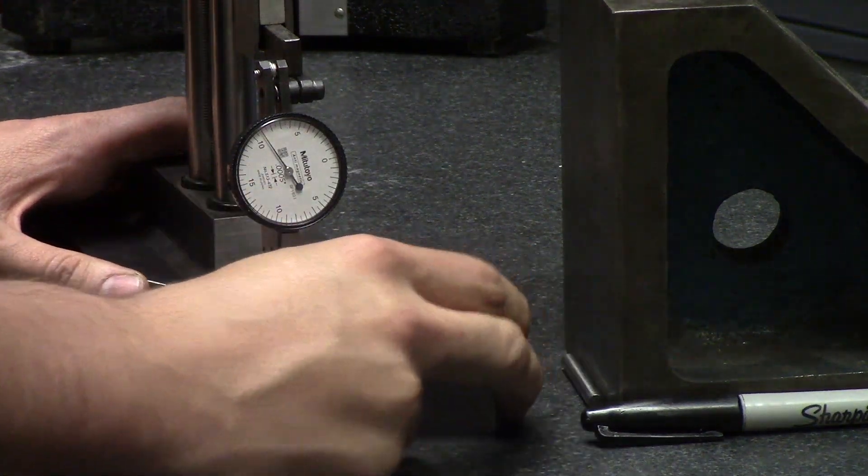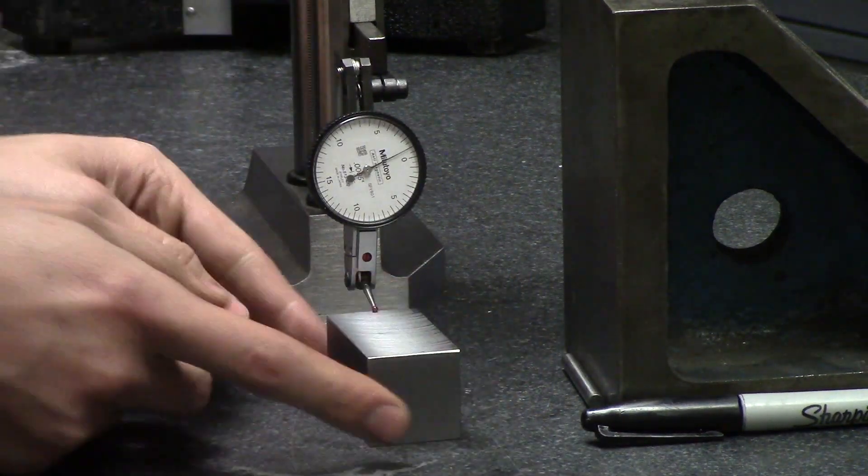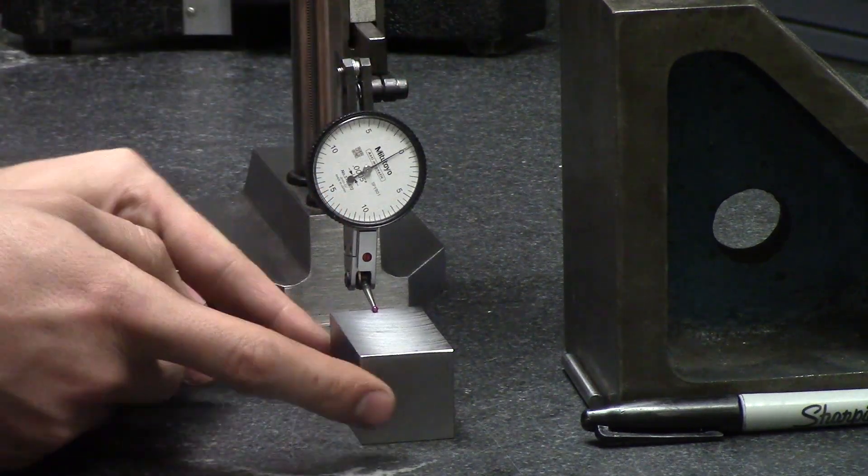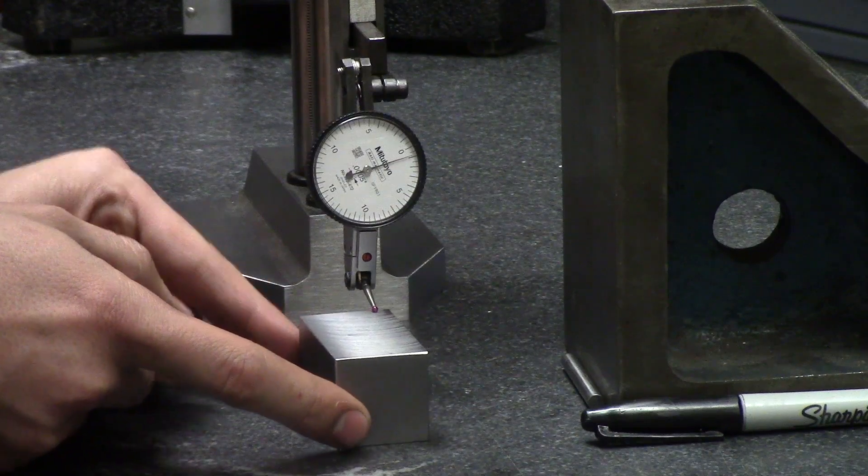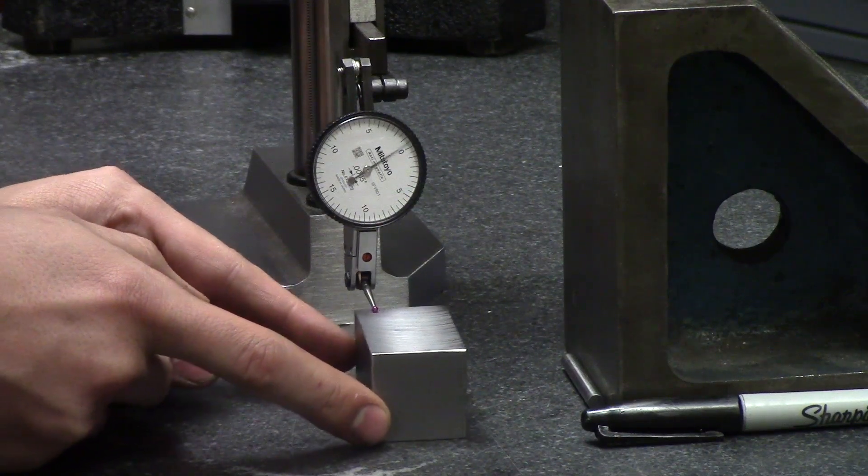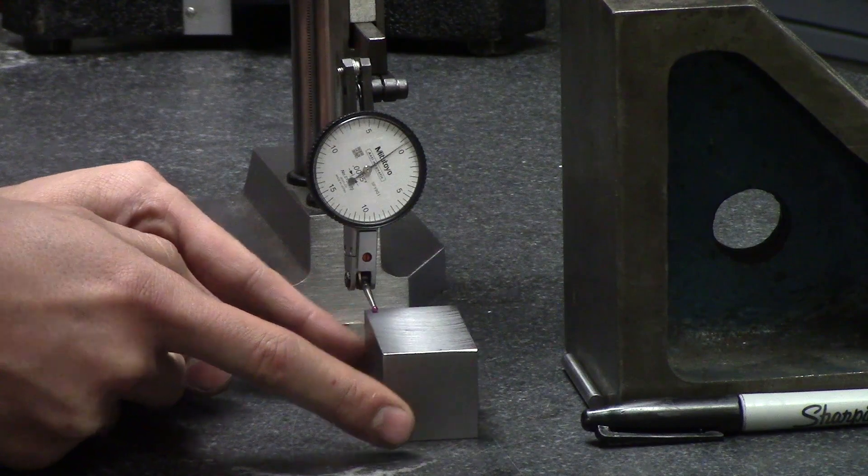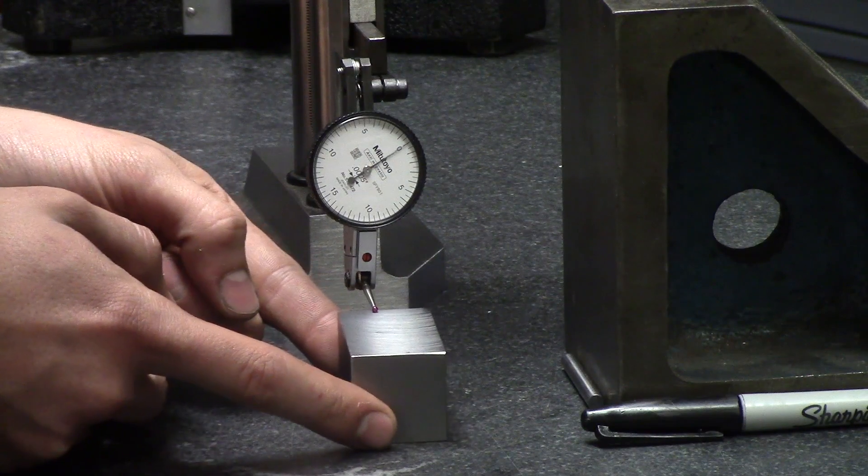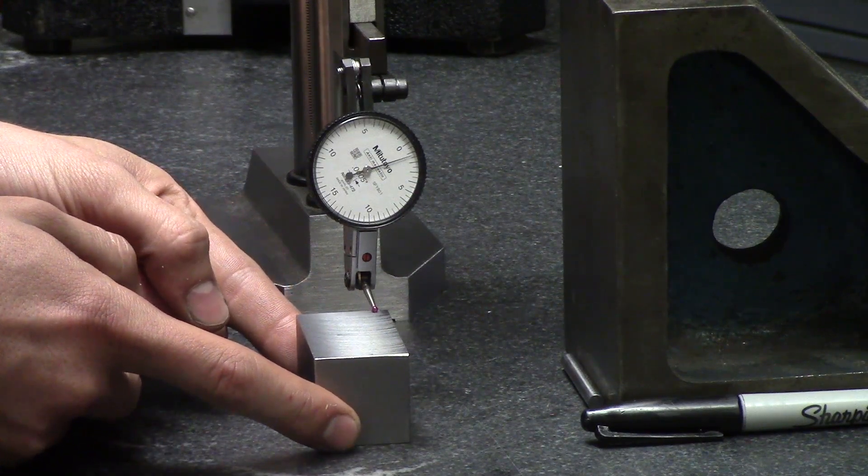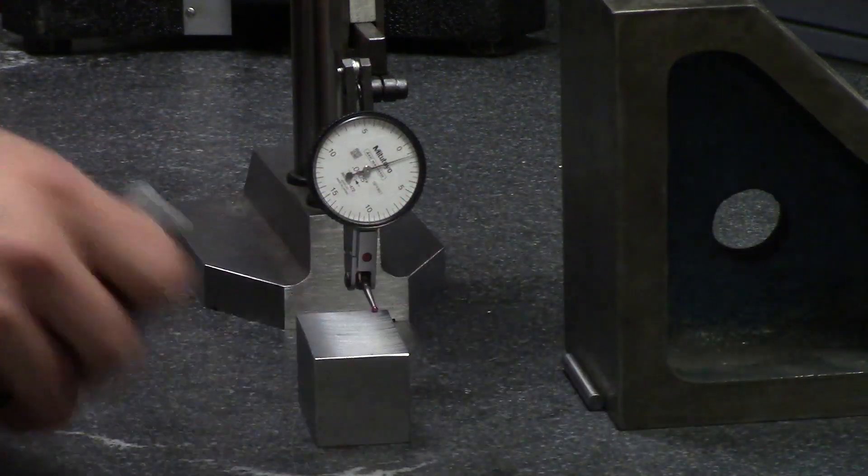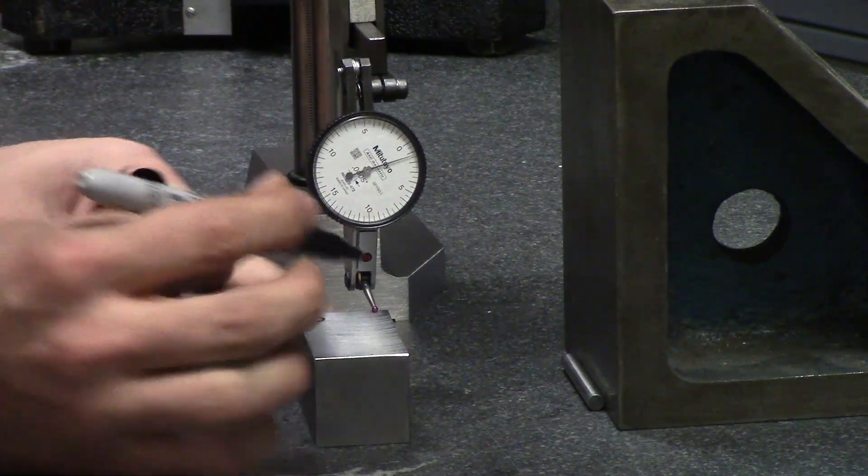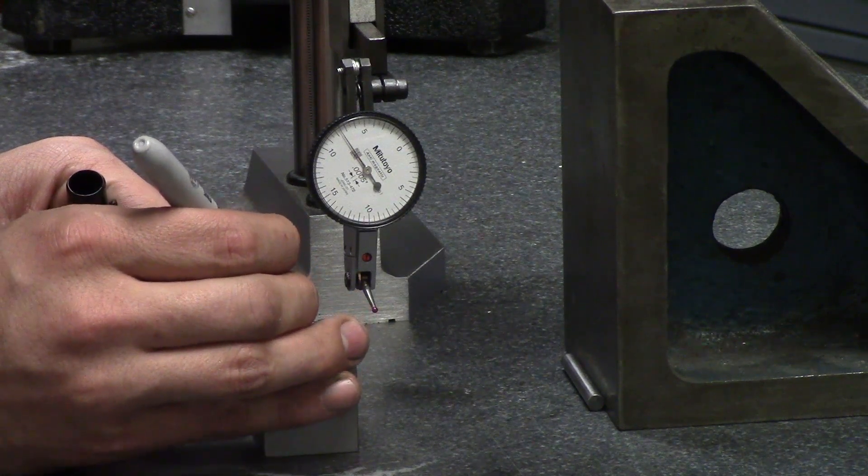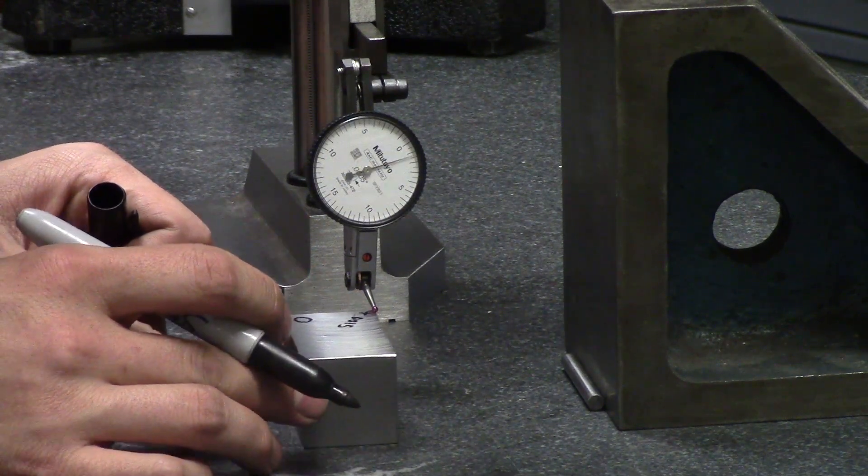So first things first we'll put our part here and we're going to check for parallel. What you want to do is zero out your indicator. All right that's positive one thou and that's minus about five tenths so we're going to zero it out right here. So I'm going to zero it out on the corner that I called out zero and then right here I'm going to write a plus point oh oh one five on that corner.